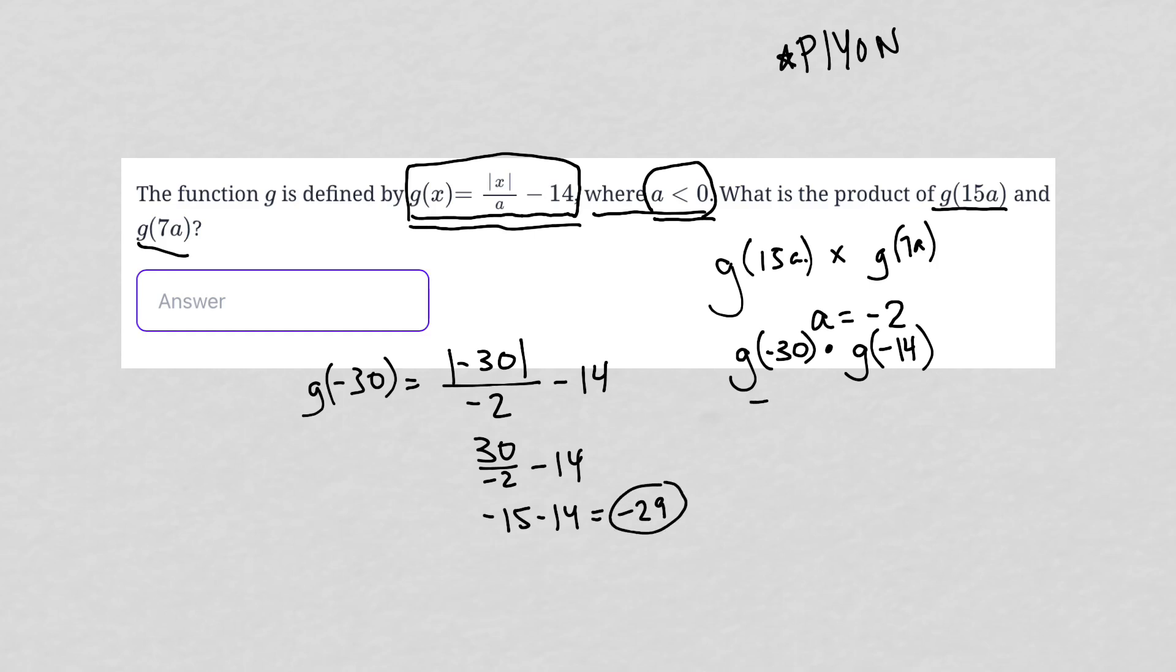So g(-30) is negative 29. How about g(-14)? Well, g(-14) would equal the absolute value of x, which is negative 14, or absolute value of negative 14, divided by a, which is negative 2, minus 14.